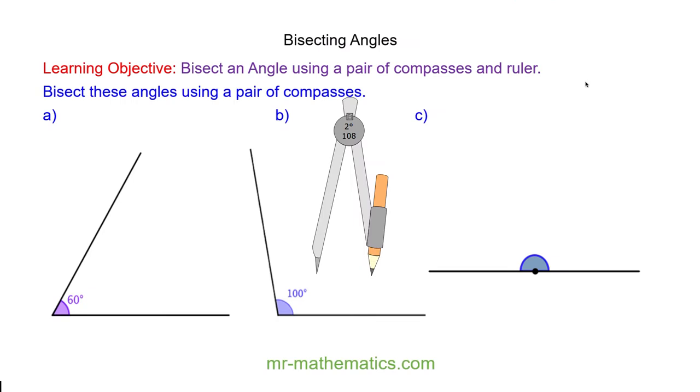Hello and welcome to our lesson on bisecting angles and straight lines. For this lesson you're going to need a pair of compasses and a straight edge. So I begin with bisecting angle A which is 60 degrees.